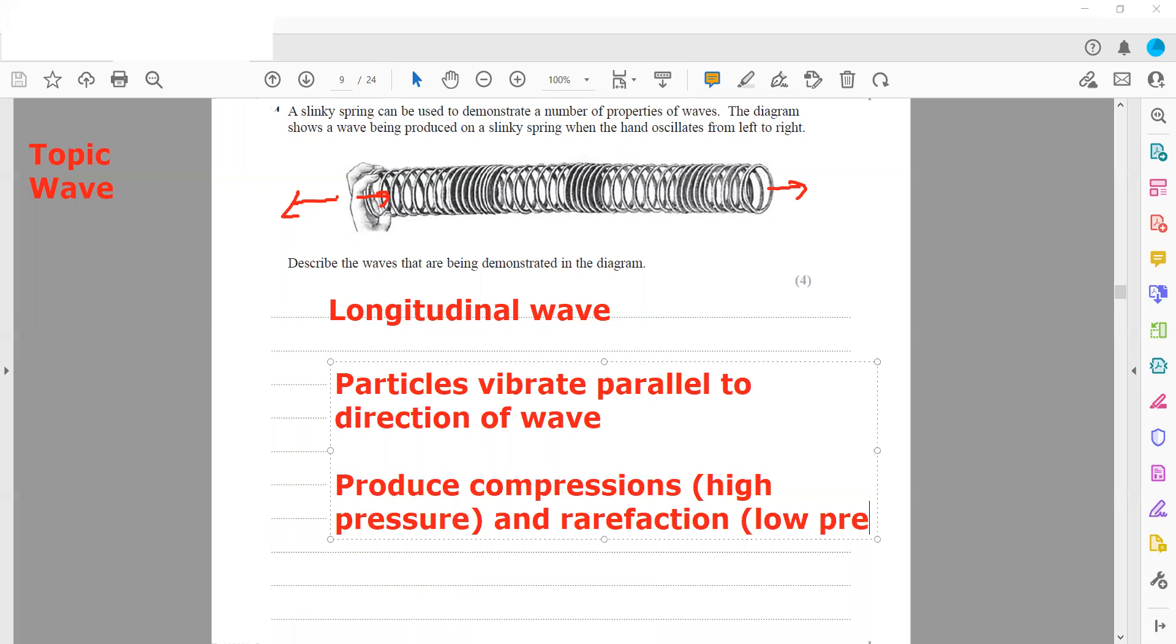The distance between two successive compressions or two successive rarefactions is known as the wavelength. The distance from one compression to another compression equals the wavelength, which is denoted by lambda.